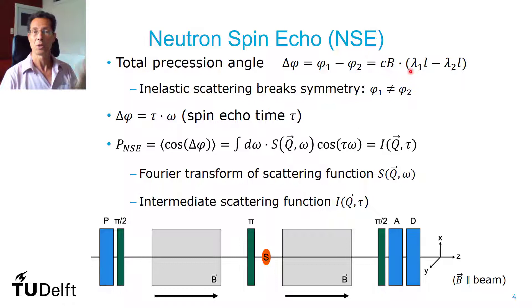You can express the amount of precession as experimental parameters, which is called the spin echo time, and really has the dimension of time.